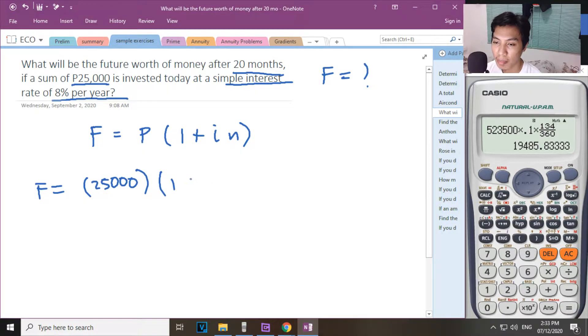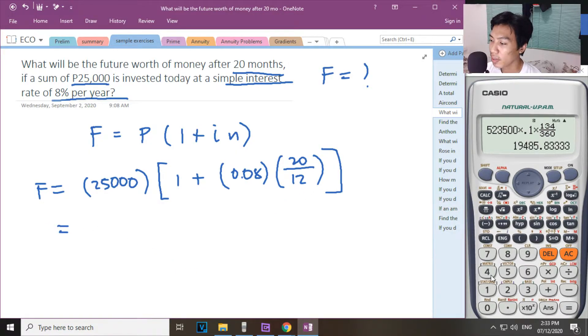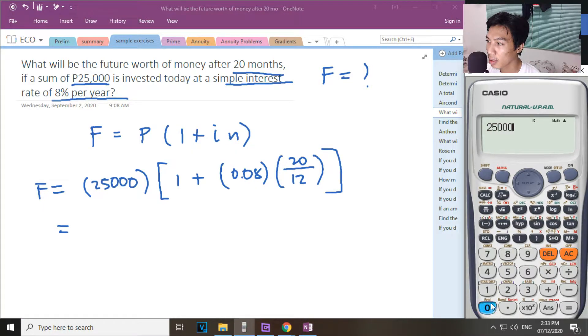F will be equal to P times 1 plus I N. Multiplied natin ng 1 plus, ano ba yung I natin? Our I will be 0.08 per year. Dapat ito ay co-convert natin. Yung 20 months, meron tayong 12 months in a year. So 20 divided by 12.